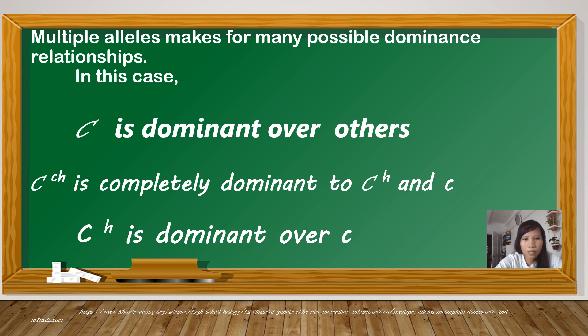Next, C raised to CH. This is the allele for Chinchilla. It is completely dominant to C raised to h, Himalayan, and small letter c, albino. So, it means that Chinchilla is dominant over Himalayan and albino.